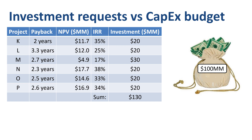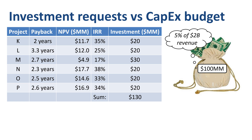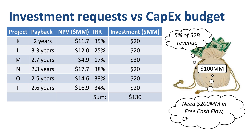That's actually a good thing — it's nice to have more projects available than what you can fund. So how does a company come up with a $100 million CAPEX budget for the year? I have seen companies relate their CAPEX budget to their expected revenue; $100 million could be 5% of $2 billion in revenue. Others might relate CAPEX to free cash flow. If the expected cash from operating activities is $300 million and the target free cash flow for the year is $200 million, then as a result there is $100 million available for capital expenditures.